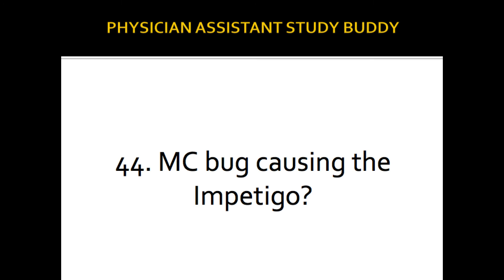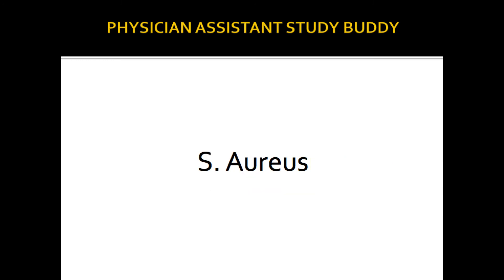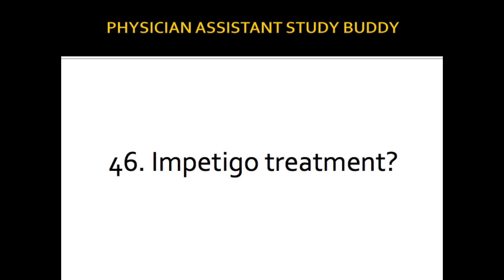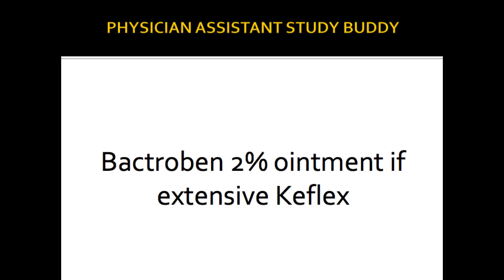Most common bug causing impetigo: Staph aureus. Impetigo buzzwords: honey-colored crusted lesions around the nose and mouth in a young child. Treatment: Bactroban 2% ointment. If extensive, then use cephalexin. Read the last sentence first — it'll tell you how extensive it is, so Bactroban ointment should be first; if super extensive, then cephalexin.